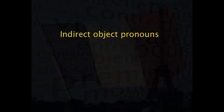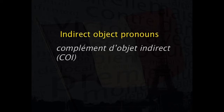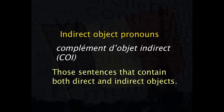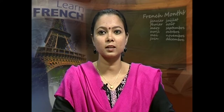The previous session focused on indirect object pronouns, known as COI or Complément d'Objet Indirect. In today's class, we will focus on sentences that contain both direct and indirect objects. This lesson will be considered the third and final part of the series on direct and indirect objects.